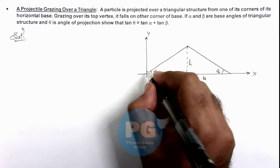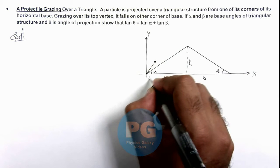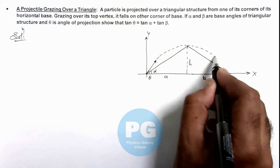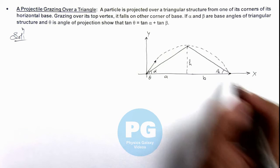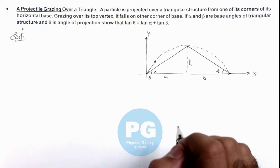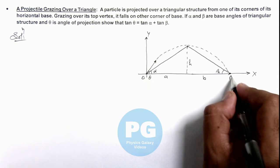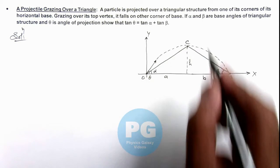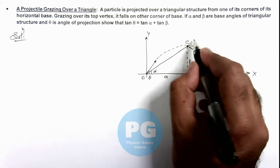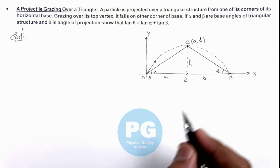We are given if we project a particle at an angle of projection theta, then the projectile grazes the top vertex and falls on the other vertex of the triangle. Say if the triangle is considered as O, A, and C, and say this point is B, so point C we can consider is having coordinates a comma h.